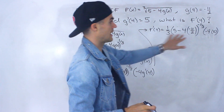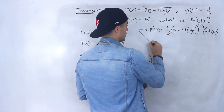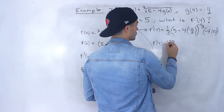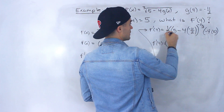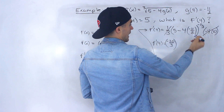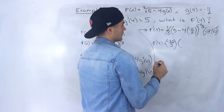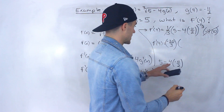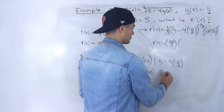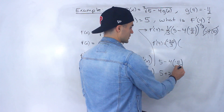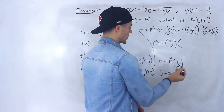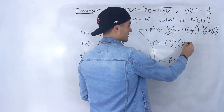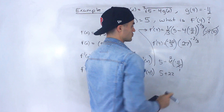Now we just simplify. Negative 4 times 5 gives negative 20 over 3. For the bracket, negative 4 times negative 11 over 2 gives positive 22 — because 2 goes into 4 twice, so negative 2 times negative 11 is positive 22. So 5 plus 22 gives us 27. The bracket becomes 27, still to the power of negative 2 over 3.